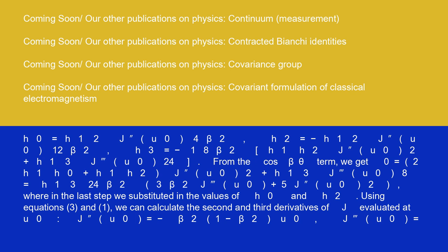h₀ equals h₁²J''(u₀)/4(2), h₂ equals h₁²J''(u₀)/12(2), h₃ equals h₁²(2u₁h₂J''(u₀)/2) plus h₁³J'''(u₀)/24.